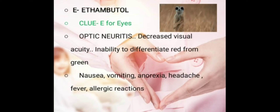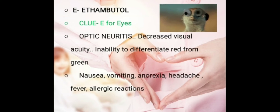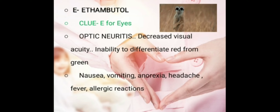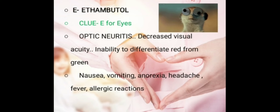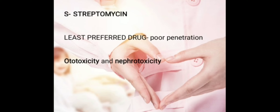E for Ethambutol. The clue here is E for eyes. Optic neuritis occurs, and visual acuity will be diminished — that is, inability to differentiate red from green. People will have difficulty differentiating red and green. There will also be fever, hypersensitivity reaction, headache, and nausea and vomiting. Remember E for eyes — optic neuritis and decreased visual acuity. S for Streptomycin — it is the least preferred drug because it has poor penetration power. Streptomycin only acts on extracellular organisms, so it is least preferred. The adverse effects caused by it are ototoxicity and nephrotoxicity.